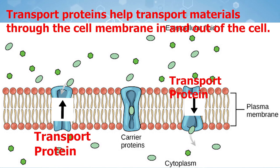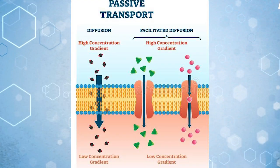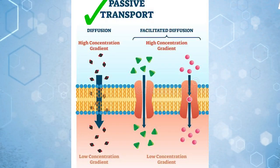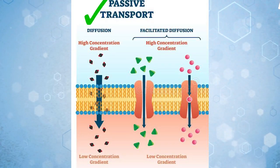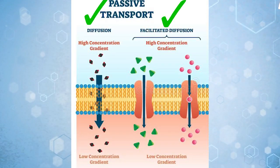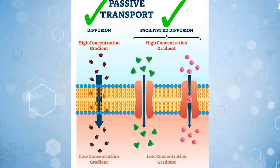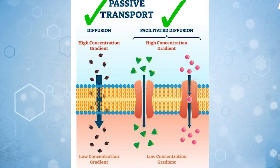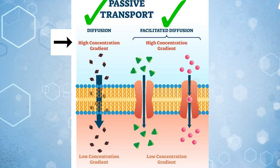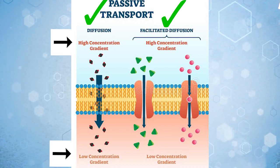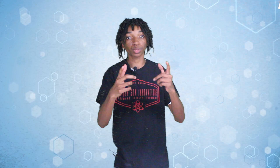When the transport happens without energy, it is known as passive transport — specifically facilitated diffusion — because the materials are moved from an area of high concentration to an area of low concentration with the help of transport proteins.